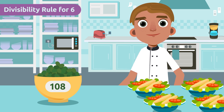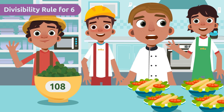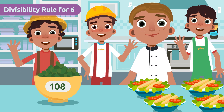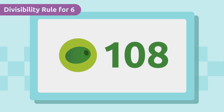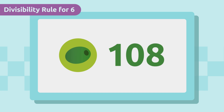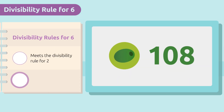There are 108 olives. To find out if this number is divisible by six, we have to check if it meets the divisibility rule of two and also of three.